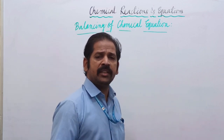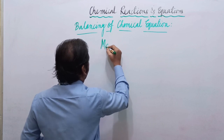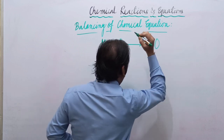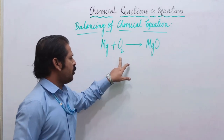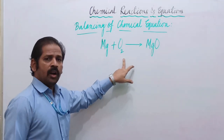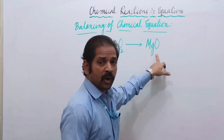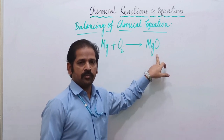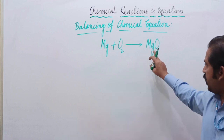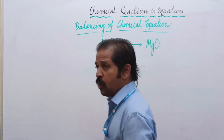For example, magnesium reacts with oxygen to form magnesium oxide: Mg + O2 → MgO. The symbol of magnesium is Mg, oxygen is O2, and the formula of magnesium oxide is MgO. Is it balanced? No, it is not balanced. This is called a skeletal equation or unbalanced equation. We have to balance it.